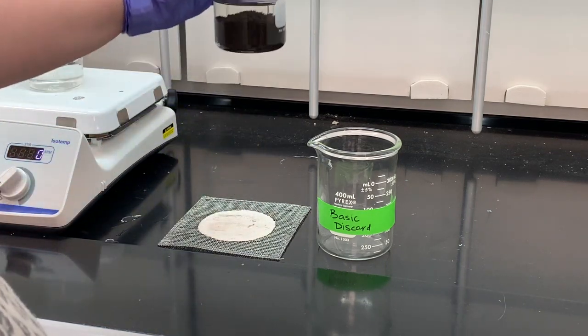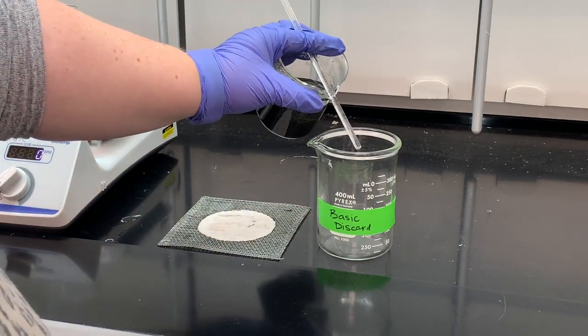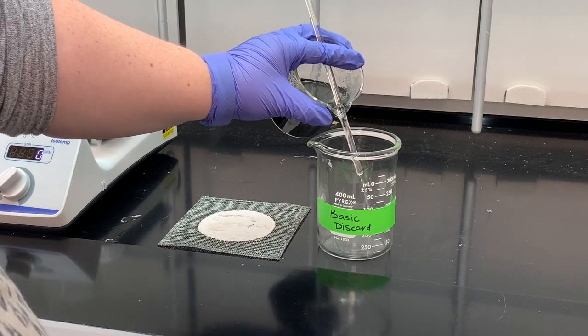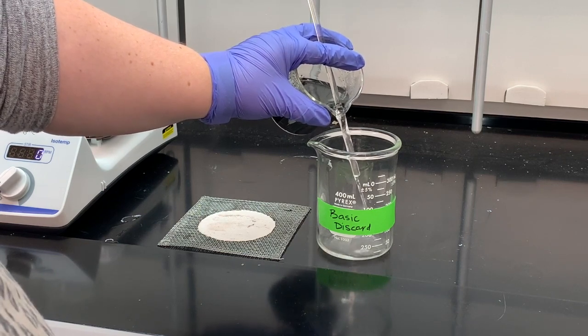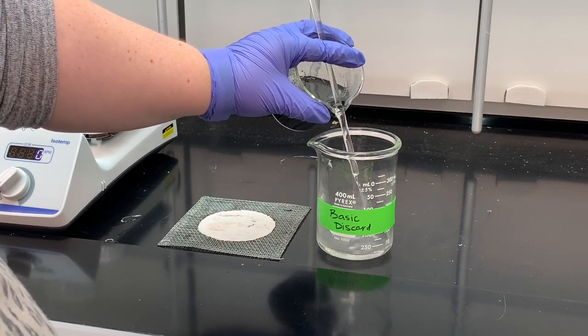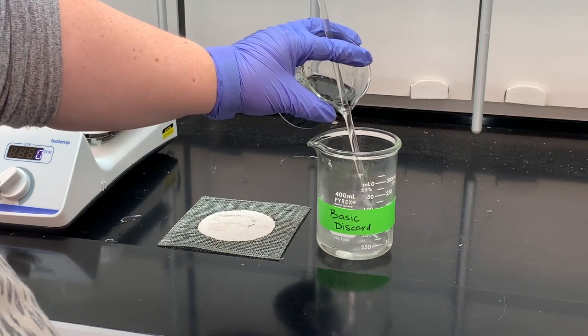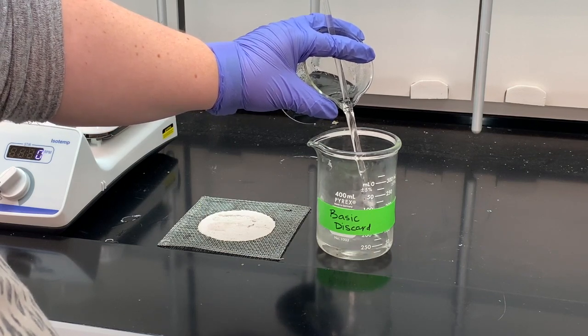But we can get some of that liquid out. So again, just very carefully, slowly pour it down that stirring rod. The stirring rod is to catch any of the solid that may try to come out while you're decanting.